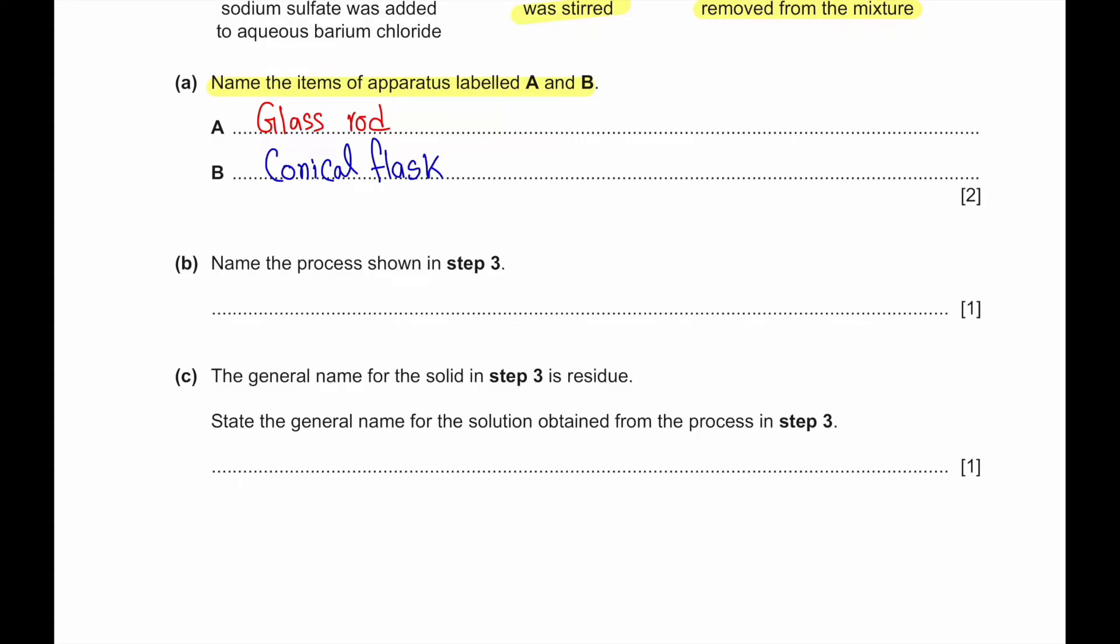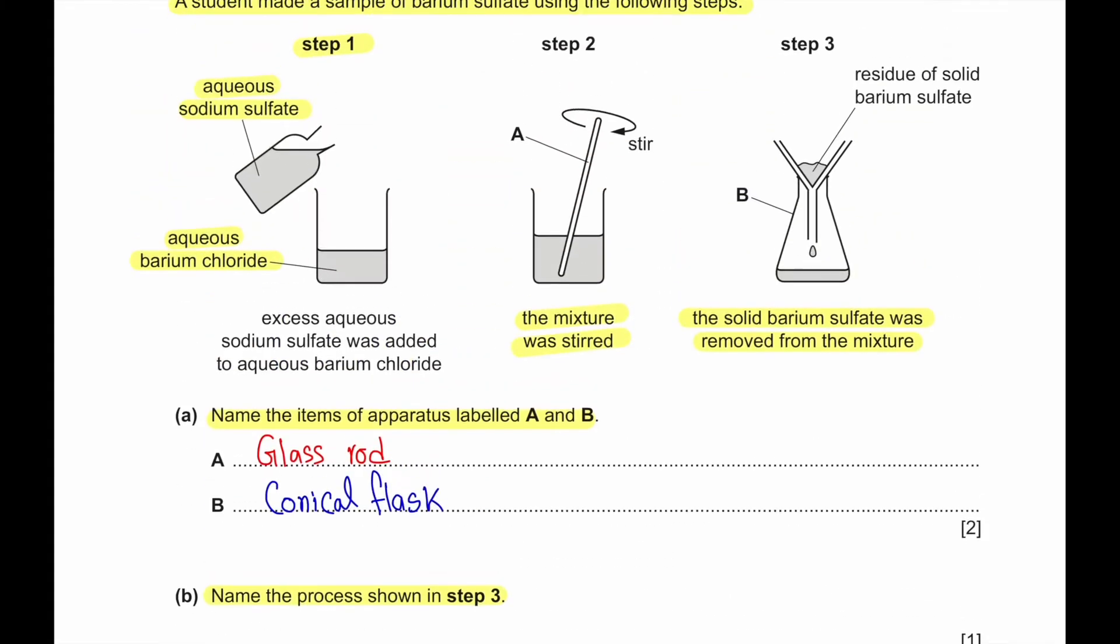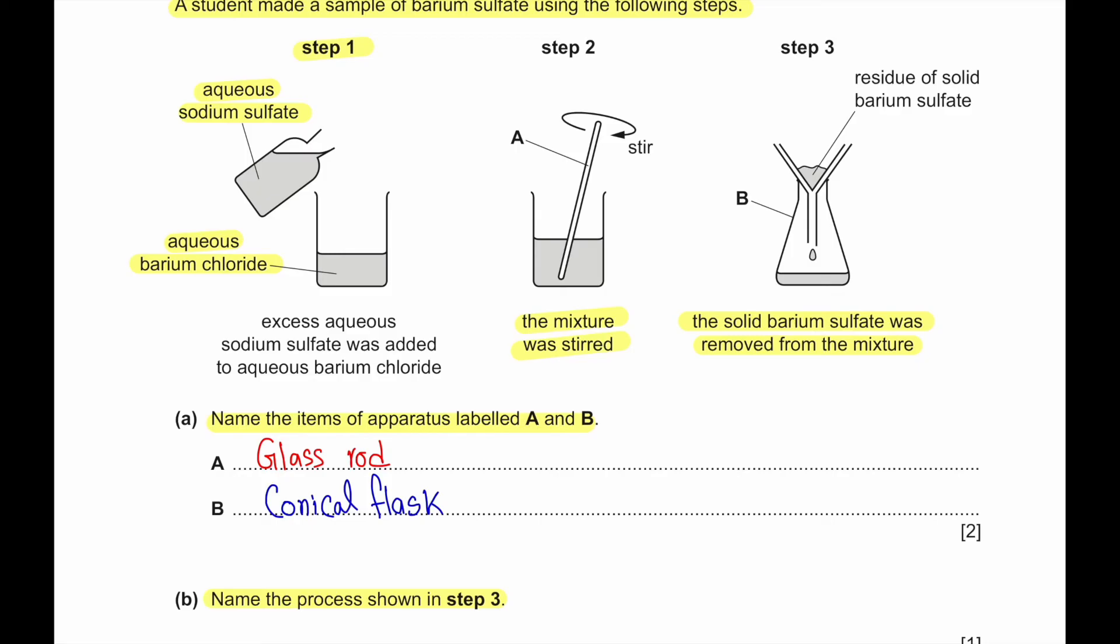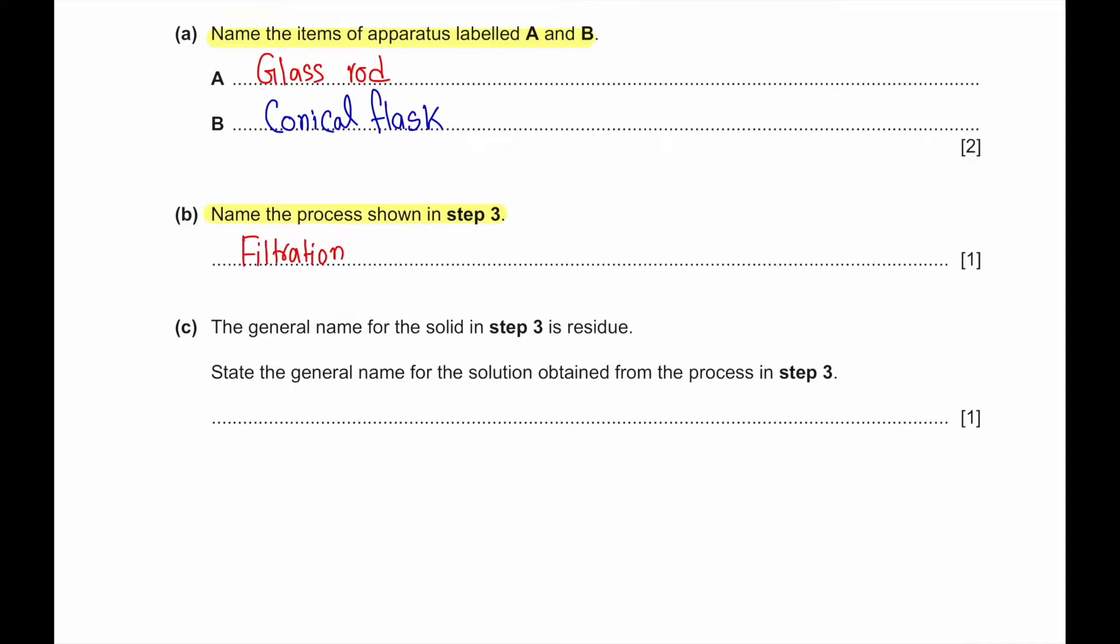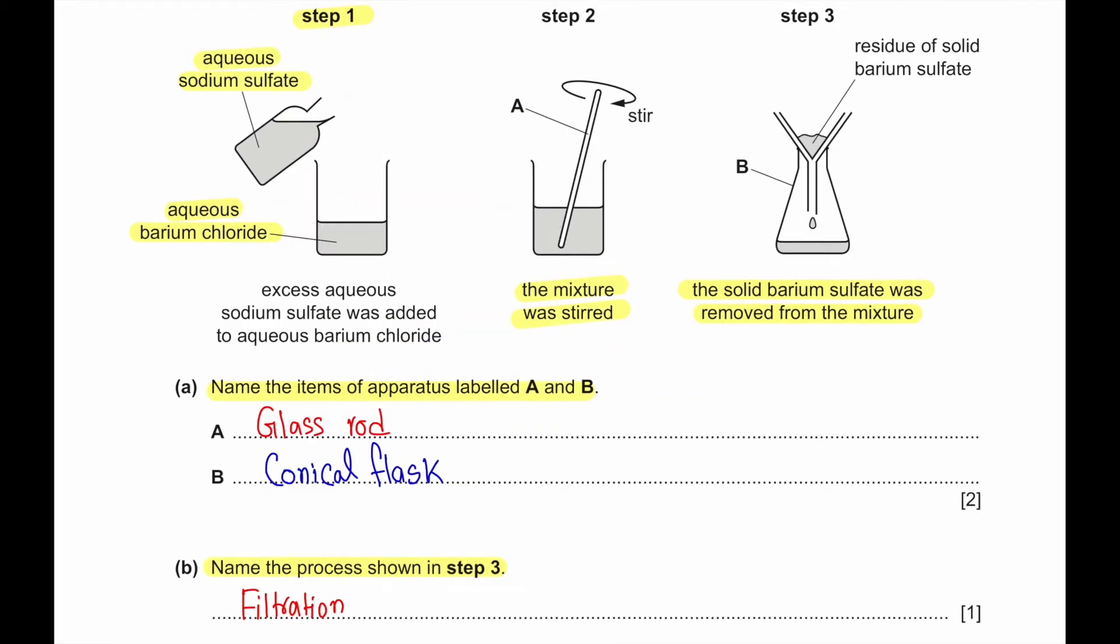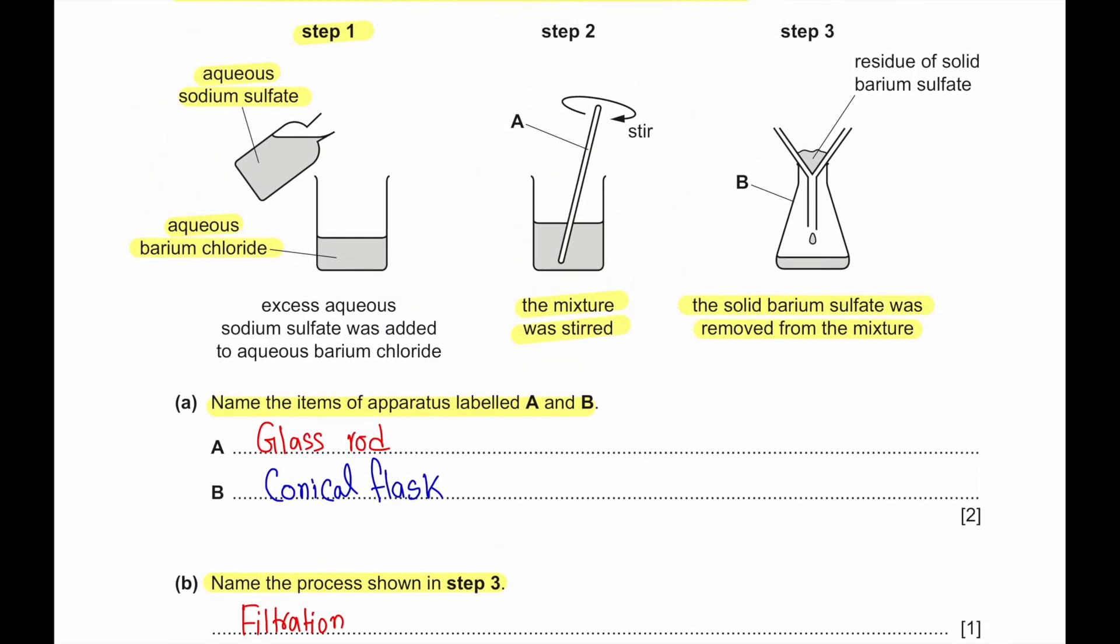Part B. Name the process shown in step 3. In step 3 we can see filtration. Part C. The general name for the solid in step 3 is residue. State the general name for the solution obtained from the process in step 3. So the solid that we are getting, solid is called residue.